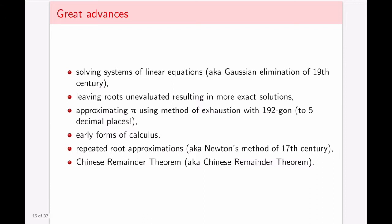Some of the other great advances include solving of the systems of linear equations with a method as similar as it can possibly be to Gaussian elimination, leaving roots unevaluated, resulting in more exact solutions. So this is your square root of two versus the decimal expansion of it. The Chinese were not afraid of the irrationality or leaving the number as a more abstract understanding of what it is.